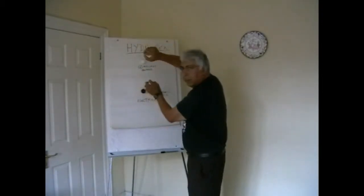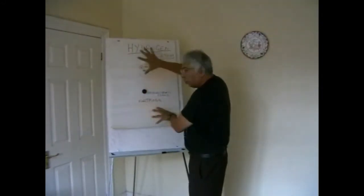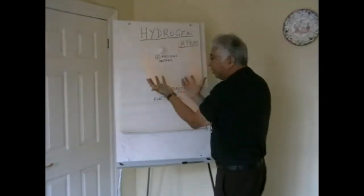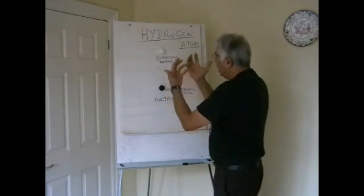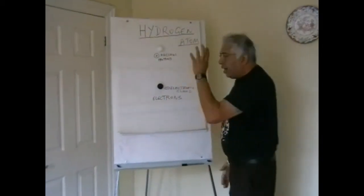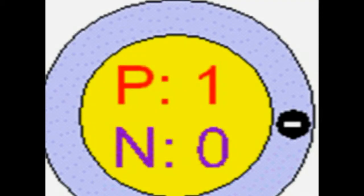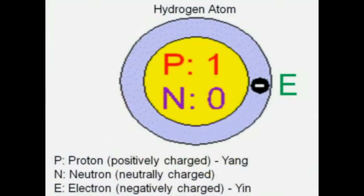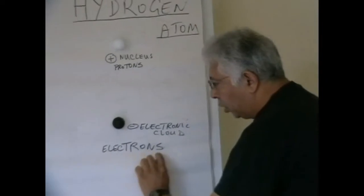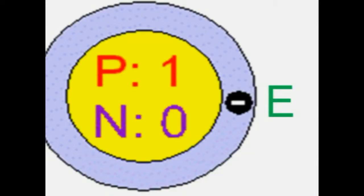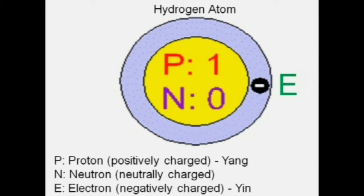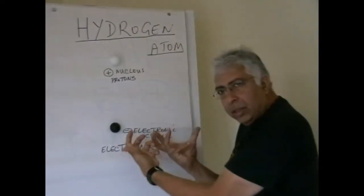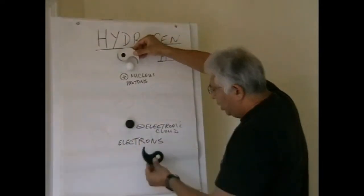What I'm trying to do here is start with a very simple explanation of atoms and molecules. The simplest atom, which is universal, is the hydrogen atom. Every atom has a positive nucleus at the center, composed of protons which are positively charged, and electrons which are negatively charged.